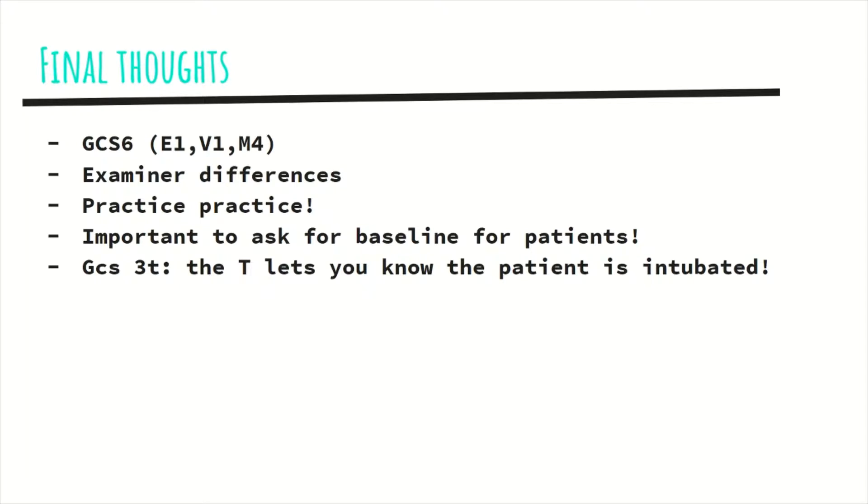And if they are confused, you need to have a reason for this confusion. Is this confusion already baseline, which is why it's very important for you to ask the baseline of your patients when you're getting report, or is it from hypoglycemia, some electrolyte abnormality? There's lots and lots of things that can cause confusion. That's why you have to be very clear and be on the same page between a GCS of 14 or a 15 and asking if it's a baseline for this patient.